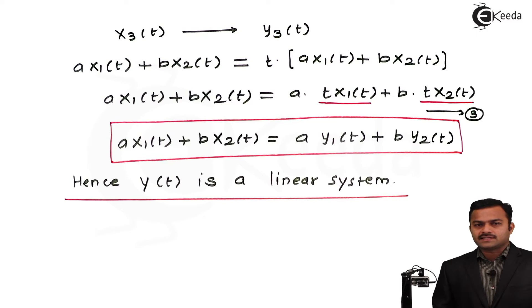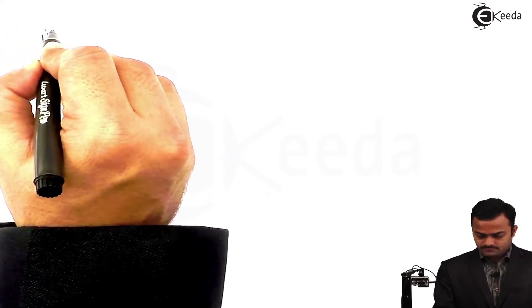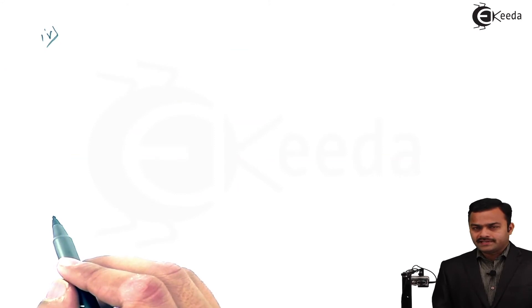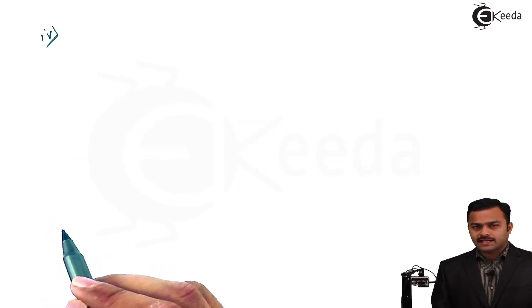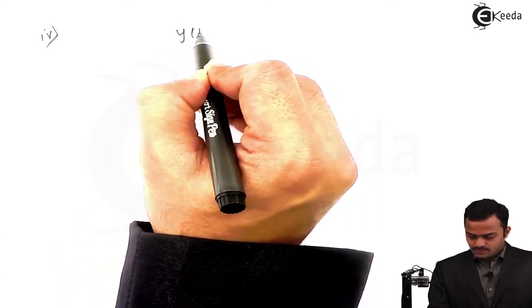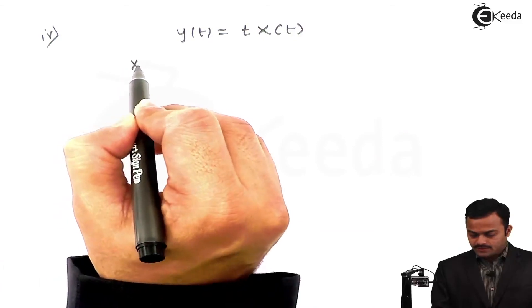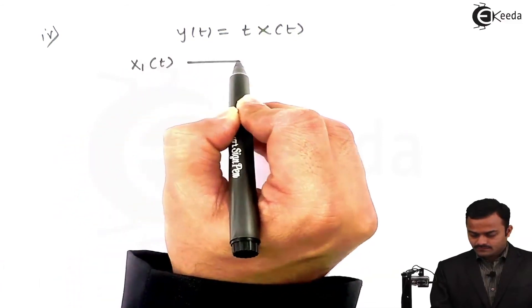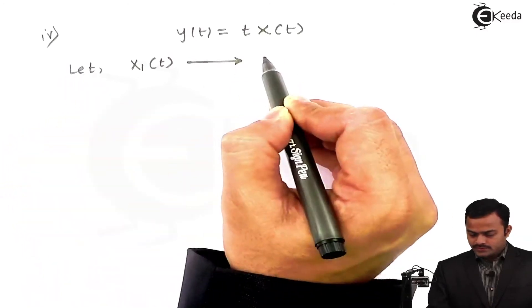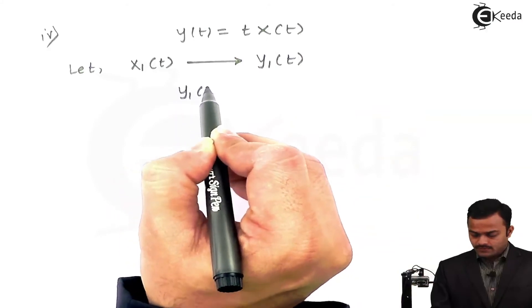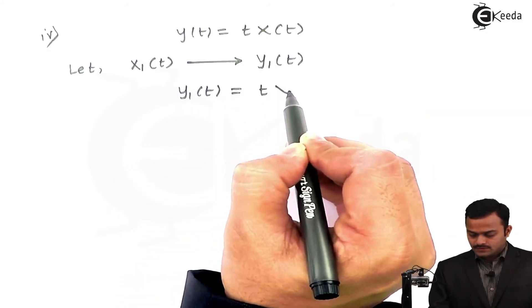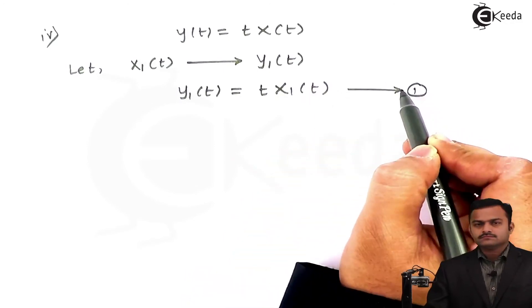Let's discuss the last property, that is time invariance. Now, for time invariance, what we are going to do: to the input x(t), we are going to shift it by some amount t₀ and we will check whether same shift is occurring at the output side or not. So the system is y(t) = t·x(t). To this system, the input applied is say x₁(t), which will give a corresponding output y₁(t), where y₁(t) is t·x₁(t). This is equation number 1.